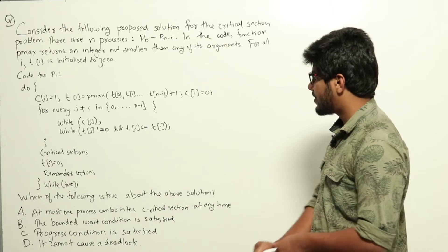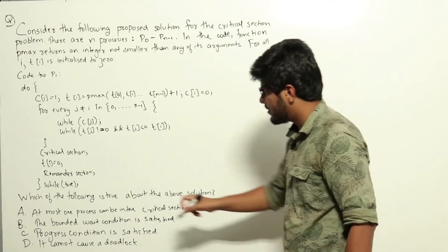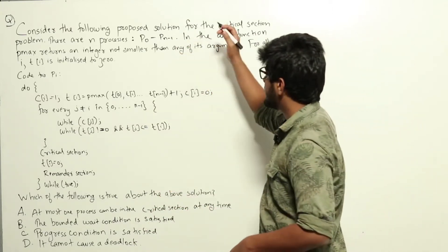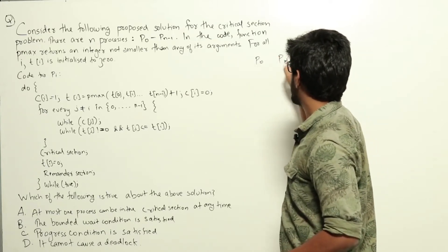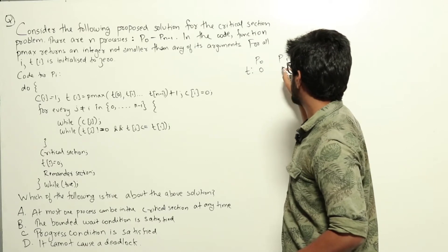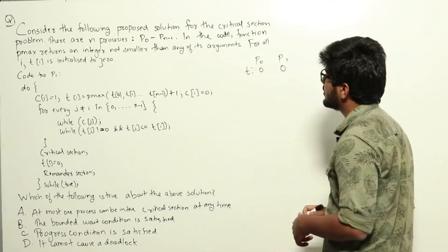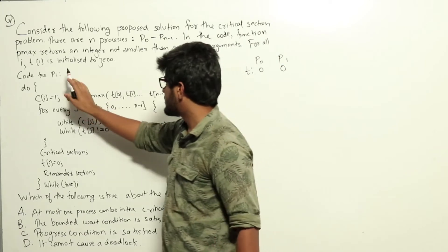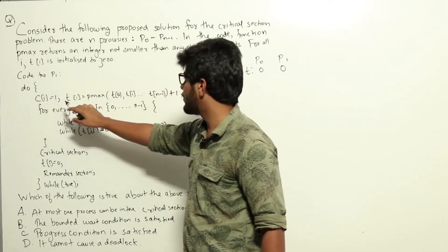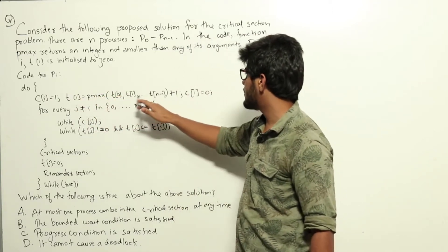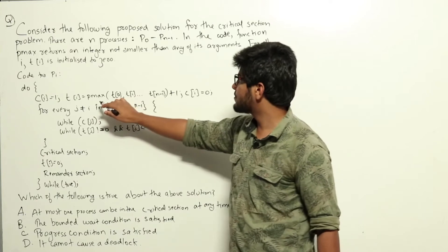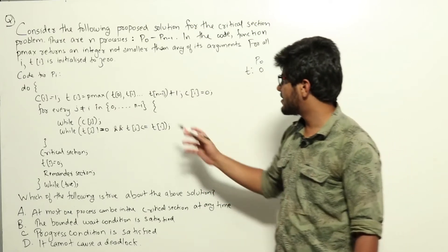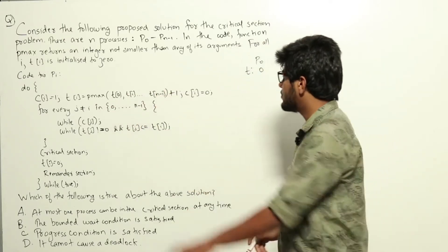Let's go through the options one by one. First, look at option D: it cannot cause a deadlock. Initially, let's say we have two processes p0 and p1. t[0] and t[1] are initialized to 0. Now let p0 and p1 both want to run simultaneously. p0 will assign c[0] equal to 1, then t[0] equal to pmax of t0, t1, up to t(n-1). The pmax function returns an integer not smaller than any of its arguments.